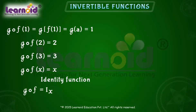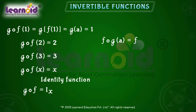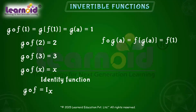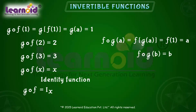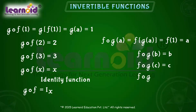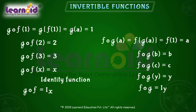Now let us find fog(a). fog(a) = f(g(a)) = f(1) = a. Similarly, fog(b) = b and fog(c) = c. This means fog(y) = y, so it is an identity function on Y.